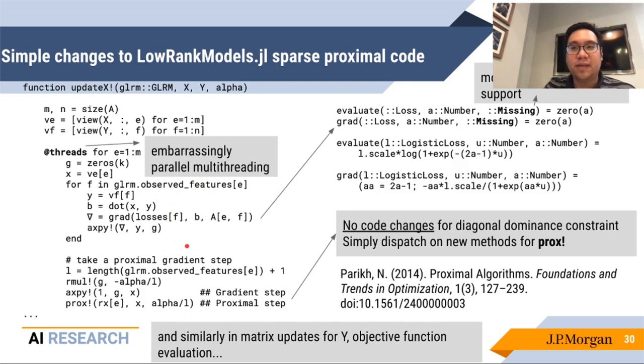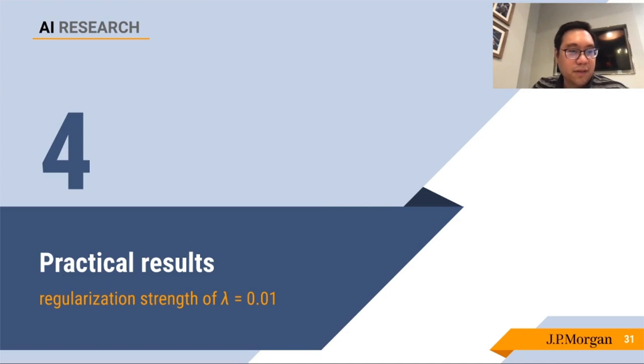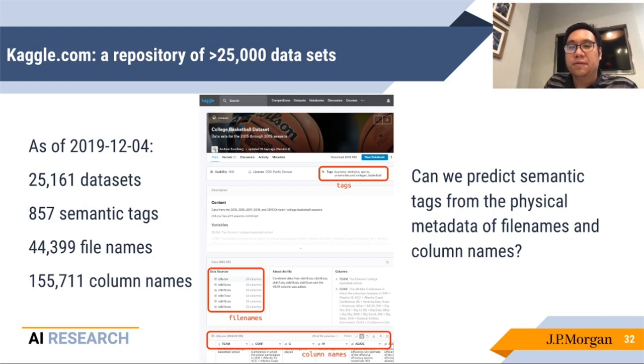Finally, we'll look at practical results on the Kaggle data set. Now Kaggle is perhaps a very well-known repository of public data sets. Here, we're looking actually as not at any particular data set on Kaggle, but rather the entire inventory and catalogue of data sets itself is the data set we are going to look at. So this data set contains an inventory of over 25,000 data sets. There are 857 labeled subjects, and we have some physical metadata about the names of files and names of columns that we see in the data. So just like the problem that motivated us from the beginning, the task here was to evaluate if we could predict semantic tags, which are mainly these subject labels, from the physical metadata that we observe based on the file names and column names that we see in the data sets.